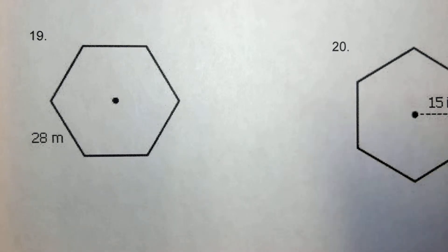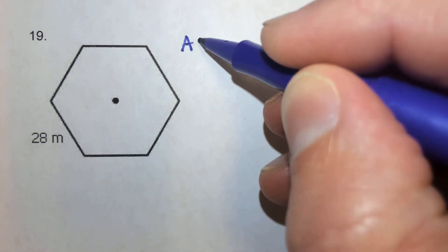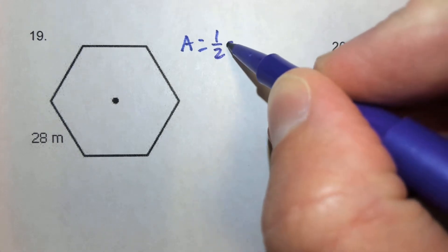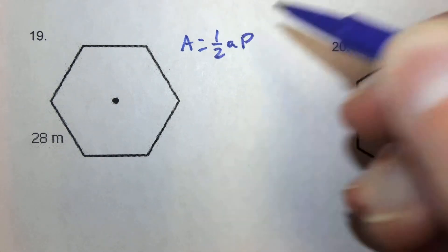Keep in mind, the formula that we're going to be using for any of these regular polygons: the area is one-half of the apothem times the perimeter.